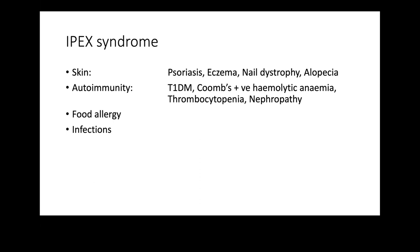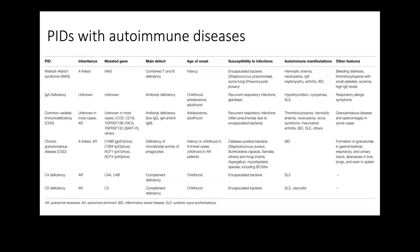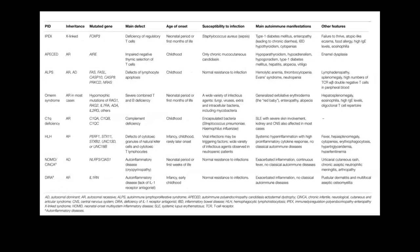IPEX is one of the disorders with autoimmune features. Other diseases with autoimmune manifestations include Wiskott-Aldrich syndrome, common variable immune deficiency with many autoimmune features, C2/C4 complement deficiency associated with SLE, CGD associated with inflammatory bowel disease, and rare conditions like APECED and autoimmune lymphoproliferative syndrome.